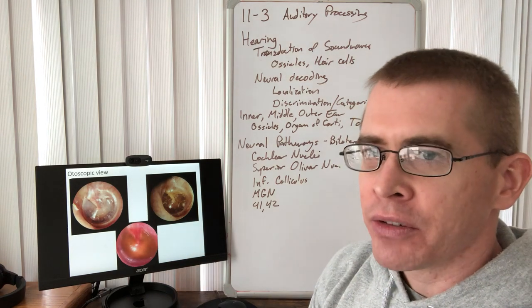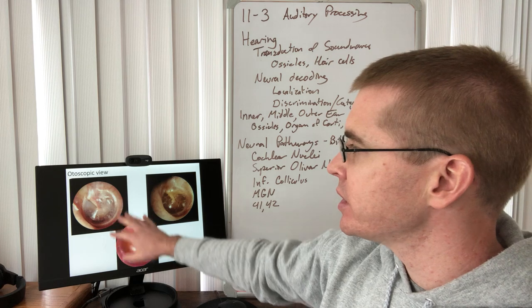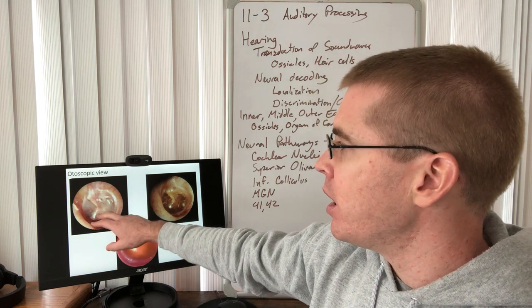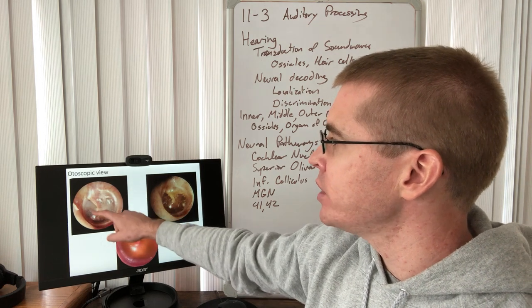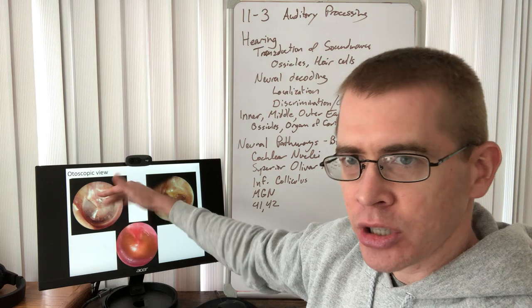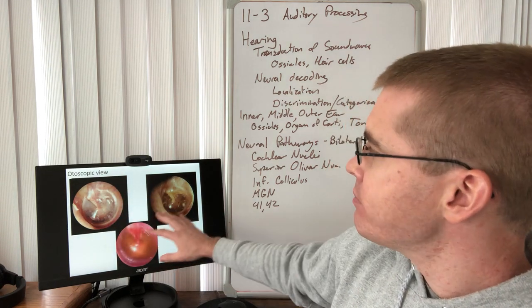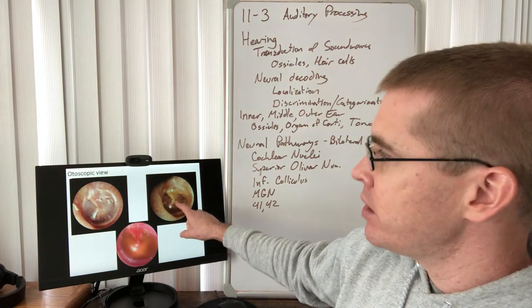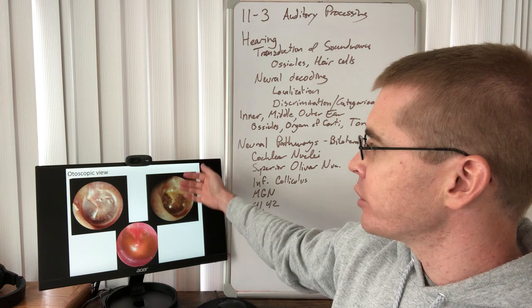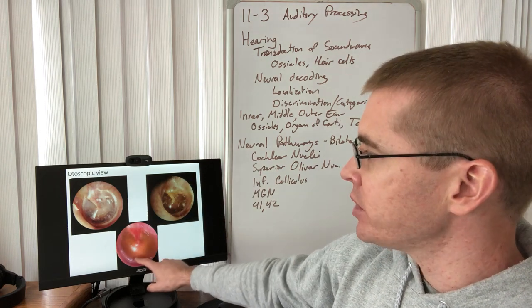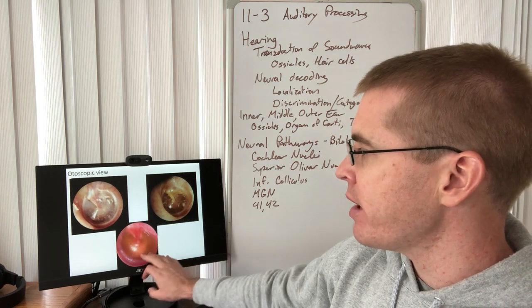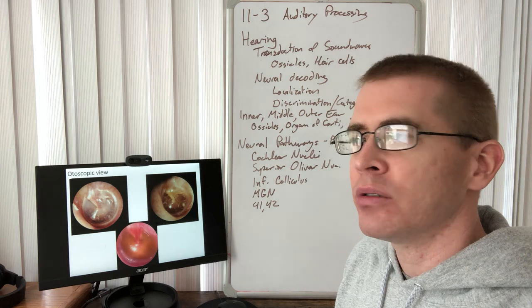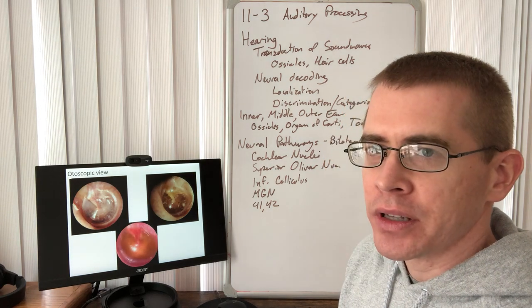Looking through the outer ear with an otoscopic view at the tympanic membrane, you can see the umbo portion of the malleus with the tympanic membrane surrounding it, and the reflection of light showing that concavity. With a middle ear infection or fluid — otitis media with effusion — you can see through that translucent tympanic membrane to see fluid, mucus, or pus components built up in the middle ear.